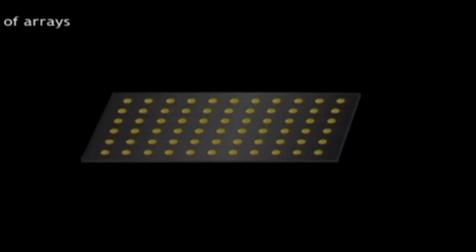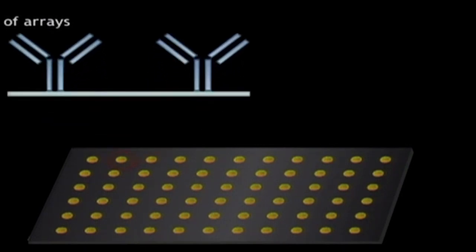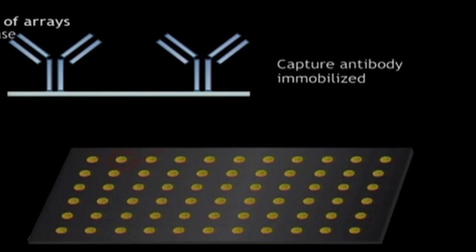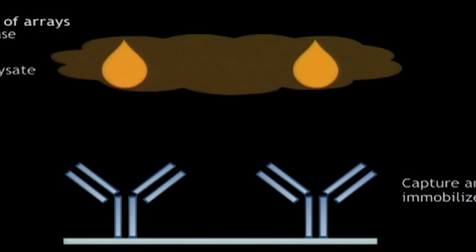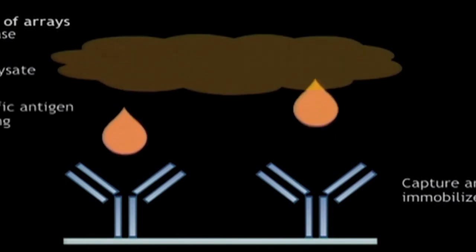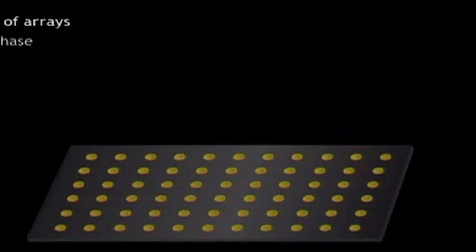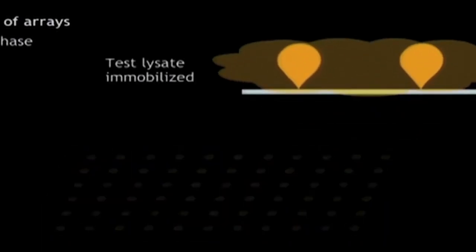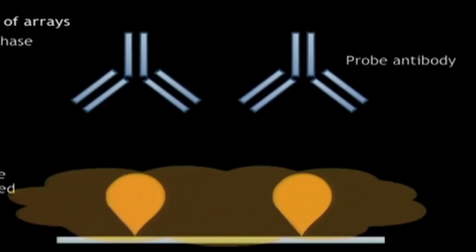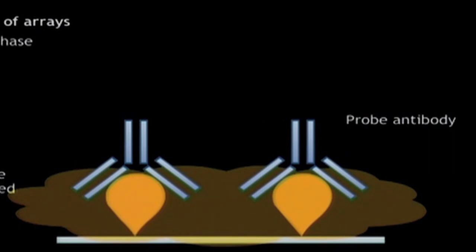The two different types of protein arrays which are commonly used are the forward protein arrays and the reverse protein arrays. In forward phase arrays, the analyte of interest such as an antibody or aptamer is bound to the array surface and then probed by the test lysate, which may contain the antigen of interest. Whereas in reverse phase arrays, the test cellular lysate is immobilized on the array surface and then probed using detection antibodies specific to the target of interest.